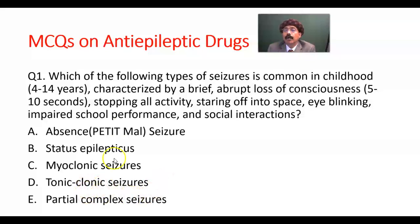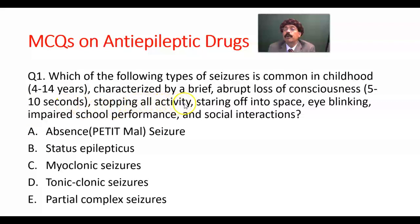Question number one: which of the following types of seizures is common in childhood during the age 4 to 14, characterized by brief abrupt loss of consciousness for about 5 to 10 seconds, stopping all activity, staring off into space, eye blinking, and impaired school performance and social interactions?